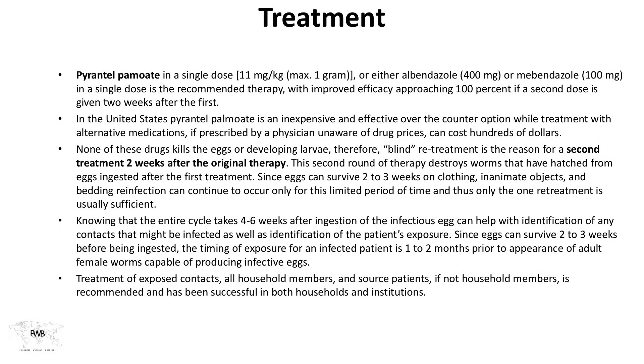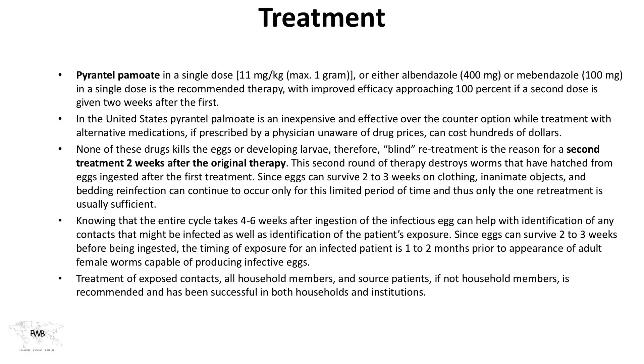For treatment, pyrantel pamoate in a single dose, or albendazole or mebendazole, can be given — though the latter are expensive in the United States. Pyrantel pamoate is an inexpensive, effective over-the-counter option. A second dose should be given two to three weeks after the first, because none of these drugs kill eggs or developing larvae. Without retreatment, reinfection occurs. The second round destroys worms that have hatched from eggs ingested after the first treatment, killing them before they are old enough to produce the next batch of eggs.